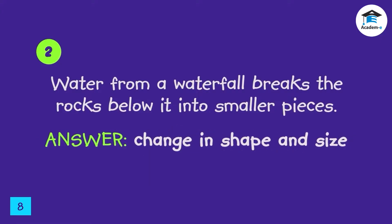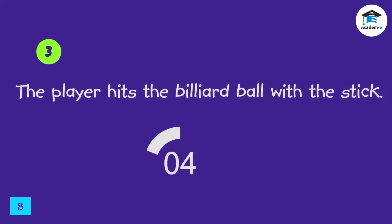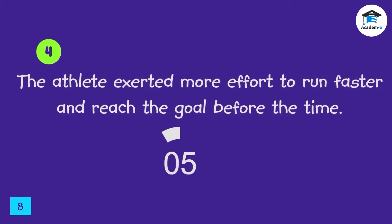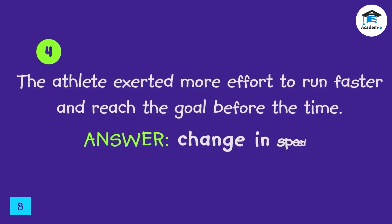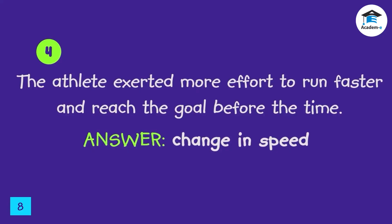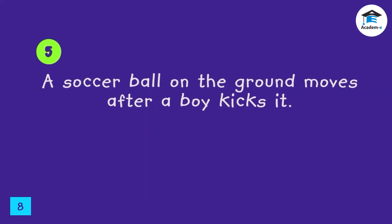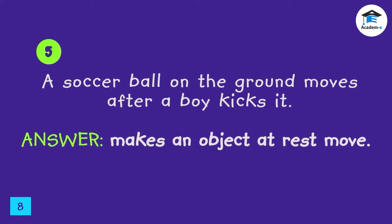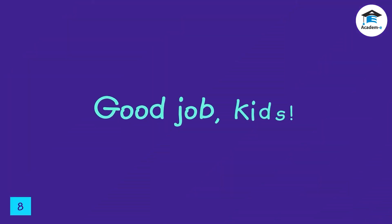Third: A player hits a billiard ball with a stick. The answer is a change in direction. Fourth: An athlete exerted more effort to run faster and reach the goal before the time. The answer is a change in speed. Fifth: A soccer ball on the ground moves after a boy kicks it. The answer is it made an object at rest move. Good job, kids!